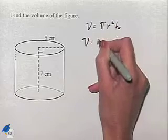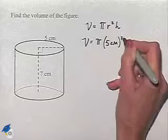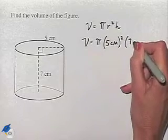So our volume is going to equal pi times our radius, 5 centimeters, squared times our height of 7 centimeters.